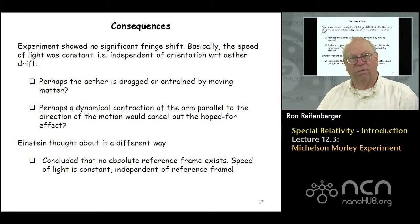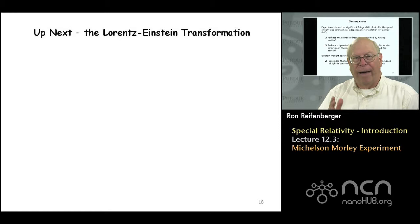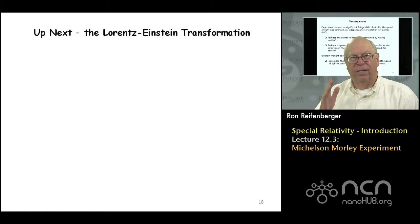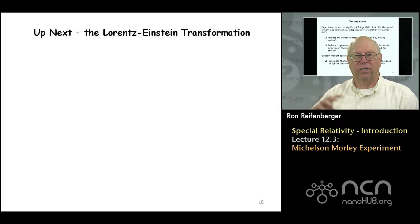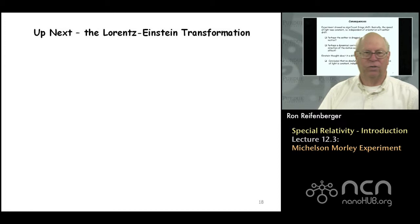We've spent some time trying to set up the background. Hopefully it gives you a better understanding of the rationale that drove these experiments. The bottom line is that because the speed of light is constant independent of reference frame motion, the Galilean transformation has to be thrown out. A new transformation has to be introduced that mixes up distance and time in a way that was completely unexpected. Please come back and listen to the next lecture where we'll discuss the Einstein-Lorentz transformation equations. Thanks a lot.